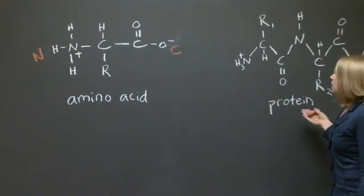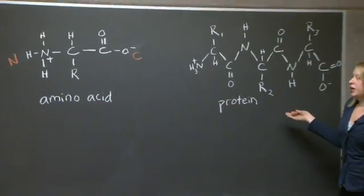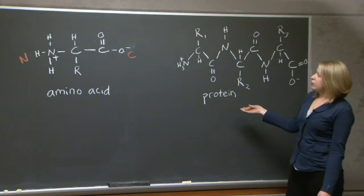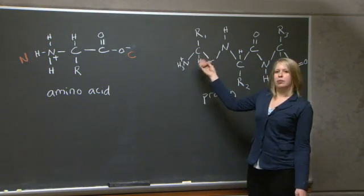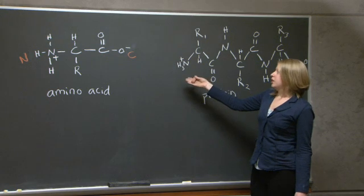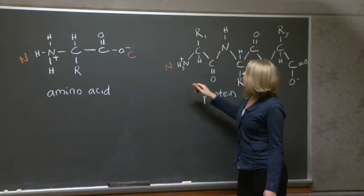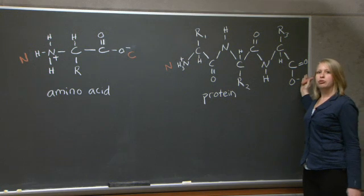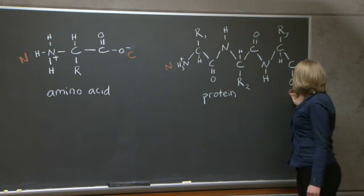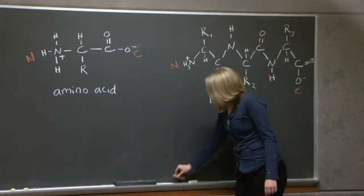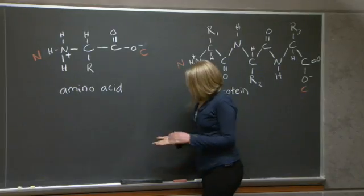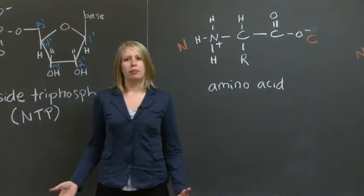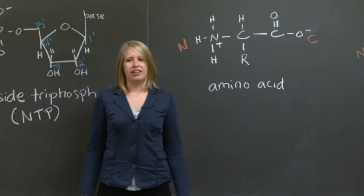As before, when we polymerize three amino acids into this short protein chain, I'm going to label this end, which has a protruding amino terminus, as N, and this end, which has a protruding carboxy terminus, as C. So that's how the conventions are in science to label and number amino acids and proteins.